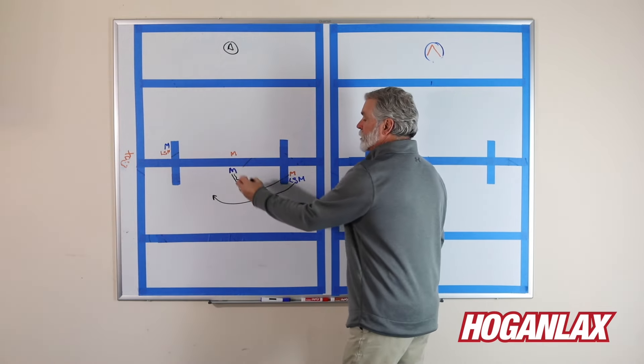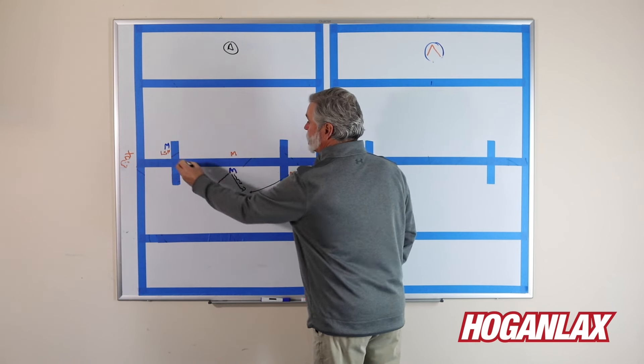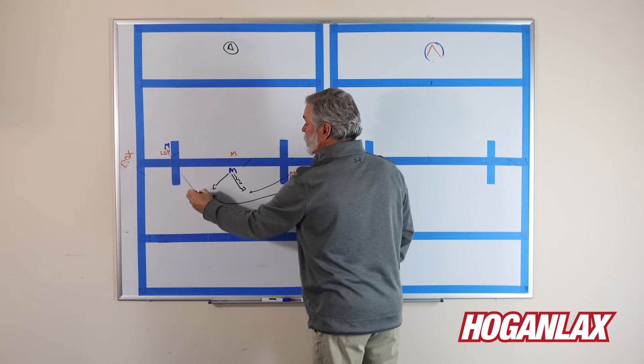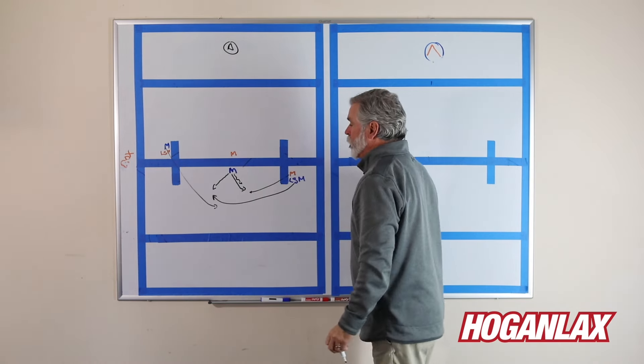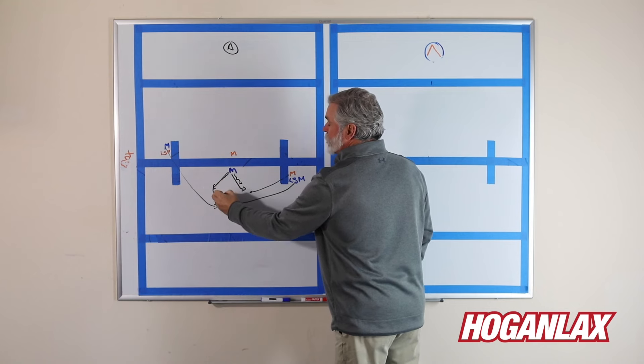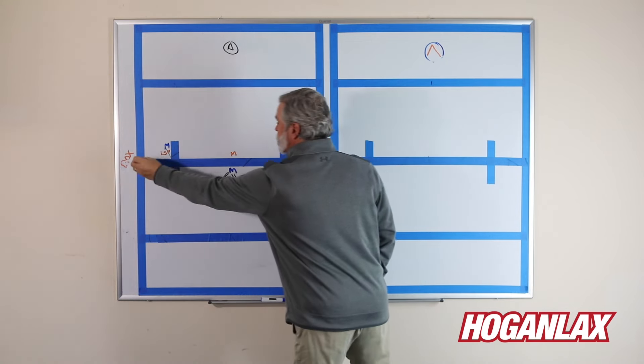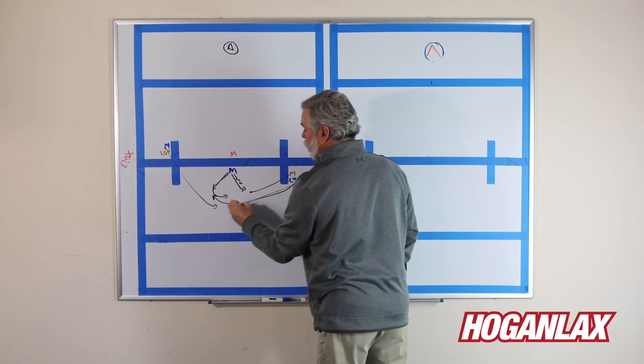Same token is if this midfielder puts the ball back here, this blue guy should not crisscross because this LSM will come to him. You see this a lot. He picks it up because he's right-handed, turns this way. The LSM wants to sub, so they crisscross like that.